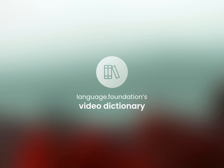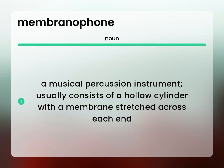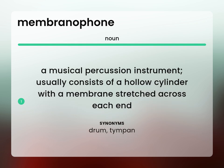Language.Foundation's Video Dictionary, helping you achieve understanding. A musical percussion instrument usually consists of a hollow cylinder with a membrane stretched across each end. Drum. Timpin.